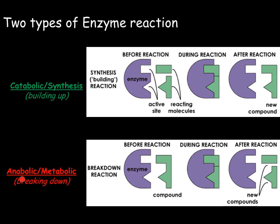Our second form is anabolic or metabolic, which is the breaking down — the one you will be more familiar with. Here we have the enzyme binding to a substrate and the enzyme will cut it in half to make two new compounds. It's important to remember that the enzyme can be used over and over again, however over time it will gradually wear out as it is a biological molecule.